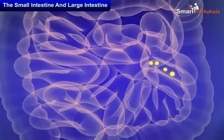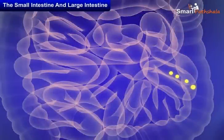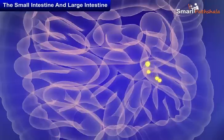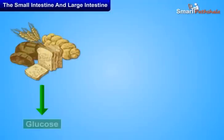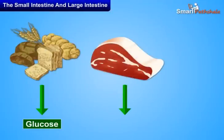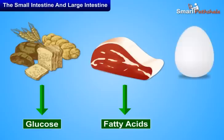The partly digested food now reaches the lower part of the small intestine, where the intestinal juice completes the digestion of all components of the food. The carbohydrates get broken into simple sugars such as glucose, fats into fatty acids and glycerol, and proteins into amino acids.